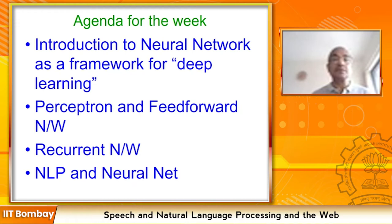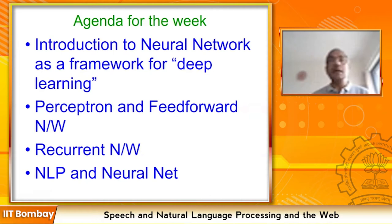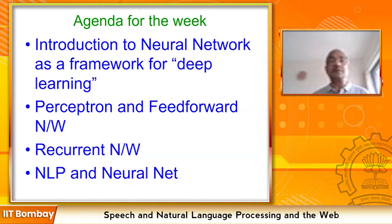Our agenda is to introduce neural networks as a framework for deep learning. Deep learning has been a catchy phrase, but for NLP the term is more meaningful than in other areas, because NLP itself has shallow NLP and deep NLP. Shallow NLP — part-of-speech tagging, chunking — does not require large amounts of contextual information and does not go deep into sentence meaning or discourse.